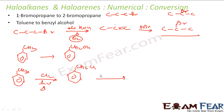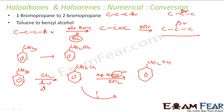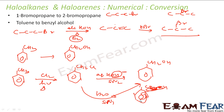Since Cl is a good leaving group, we can use aqueous KOH (nucleophilic substitution, SN2) to replace Cl with OH, giving benzyl alcohol (CH2OH). Note: alcoholic KOH gives dehydrohalogenation, while aqueous KOH gives nucleophilic substitution. Alternatively, water (a weak nucleophile) can be used for an SN1 reaction to give the same product CH2OH.